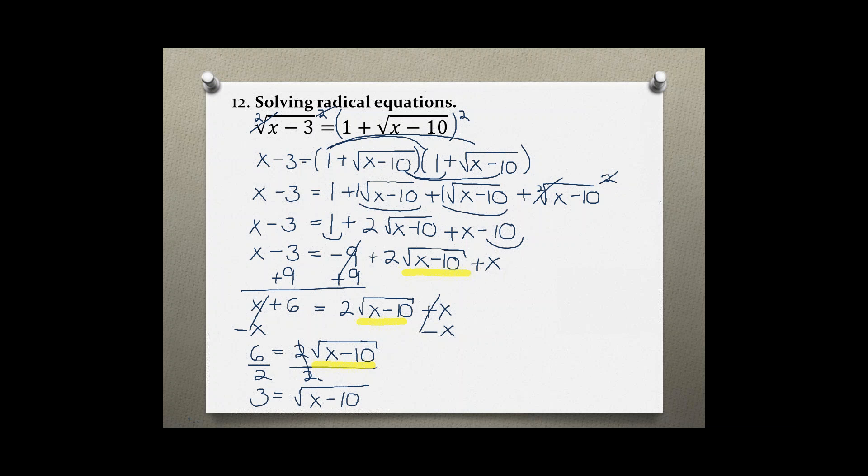Now I got the radical all by itself, and this is an index of 2, so I can use the power of 2 on both sides. On the right side, the square root and the square cancel out. On the left side, I have 3 raised to the second power, so 3 times 3 is 9, which equals x - 10. Solving for x: adding 10 to both sides, and we have x = 19.